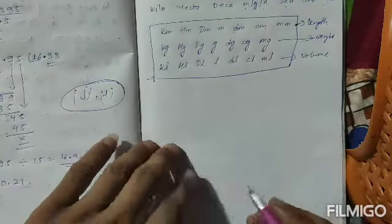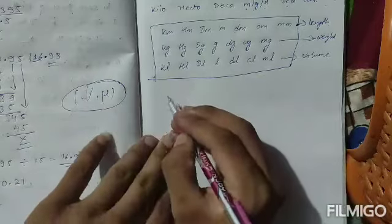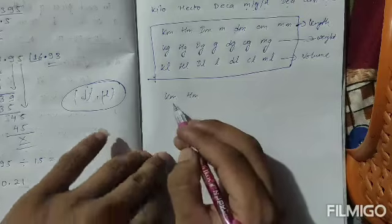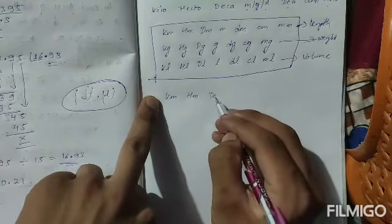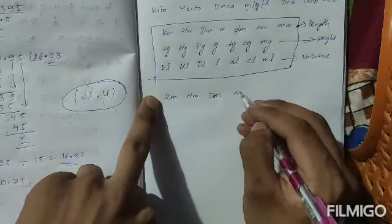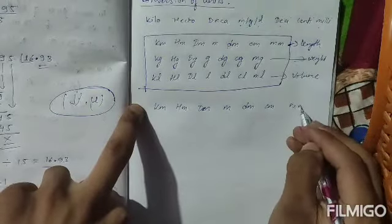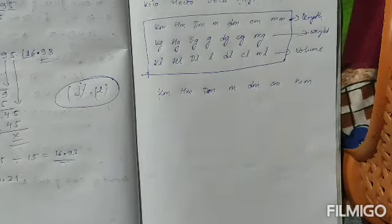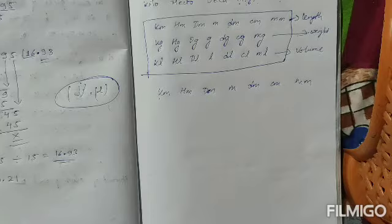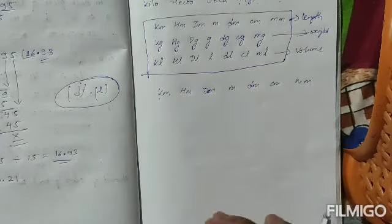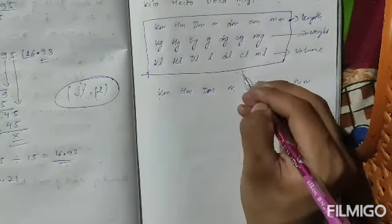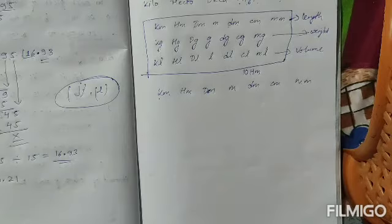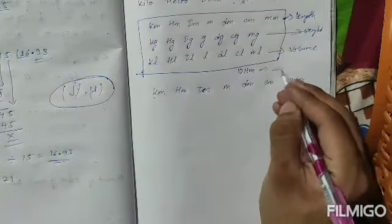Now we learn the relationship between units. Let me give an example with length. The order from largest to smallest is: kilometer, hectometer, decameter, meter, decimeter, centimeter, millimeter. Suppose the length of a rod is given as 10 hectometers and you have to write it in meters.